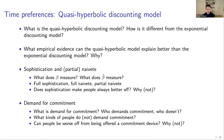You should understand what demand for commitment is, who demands commitment and who doesn't. Are fully sophisticated, fully naive, or partially naive people potentially demanding commitment? What are the conditions under which someone demands commitment, and can people actually be worse off from being offered a commitment device, and why?